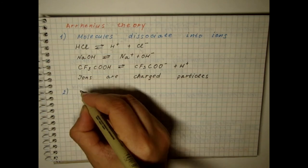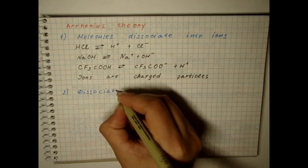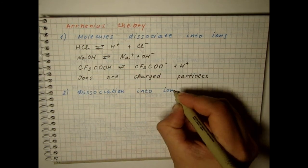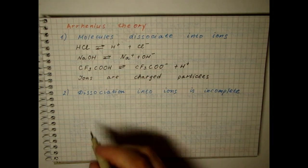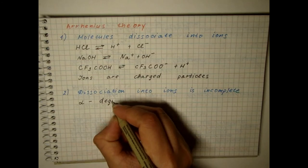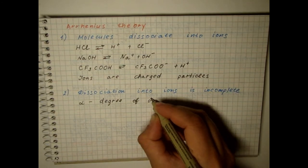Molecules' dissociation into ions is incomplete. Not all of the molecules dissociate, but only a certain percentage of them, which is called the degree of dissociation. It is denoted by the letter alpha.